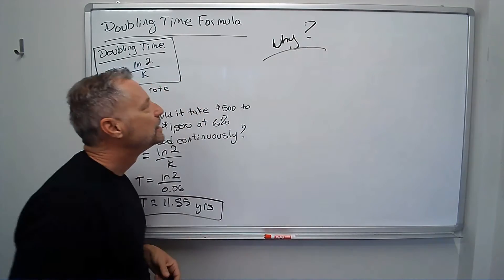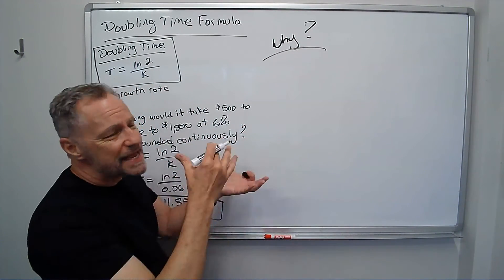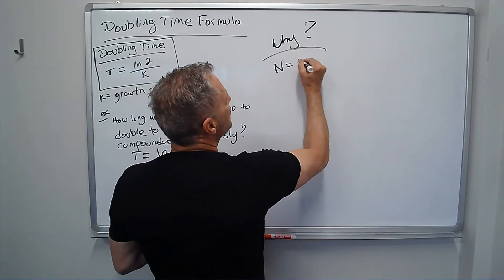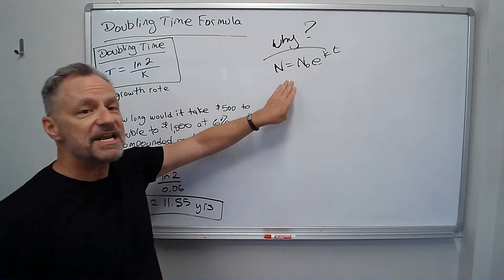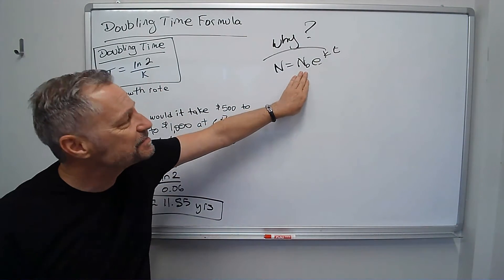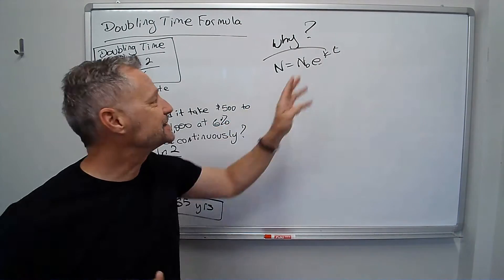Why? All right, so I've got my general exponential formula, and you can use n's or p's. Let's use N equals N sub 0, e to the kt, where N is the number of whatever I have at the end. Then N sub 0 is what I start with, and then I have e, k is the growth rate, t is the time.